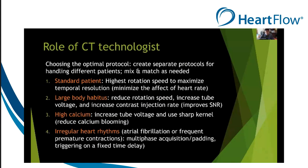In terms of choosing the optimal protocol, we should create separate protocols for different types of patients and mix and match as needed. For a standard patient, our focus is on the highest rotation speed to maximize temporal resolution, which is the Achilles heel of coronary CTA. If a patient has large body habitus, we want to reduce rotation speed, increase tube voltage, and increase contrast injection rate to improve signal-to-noise ratio — though we sacrifice temporal resolution, so we want a lower heart rate.